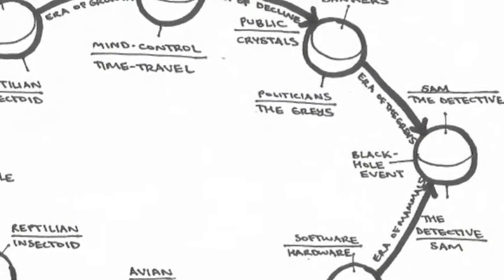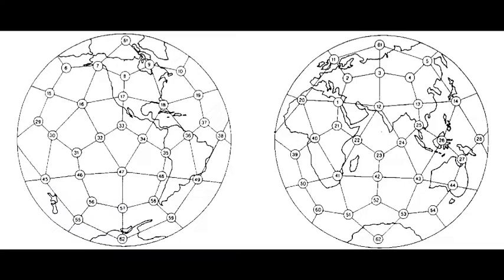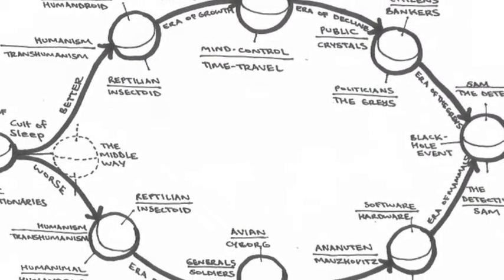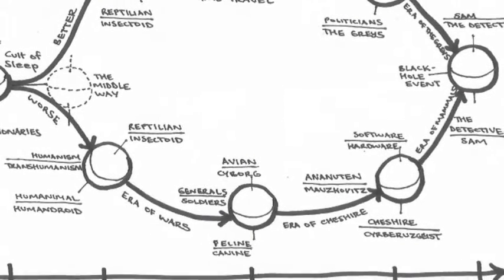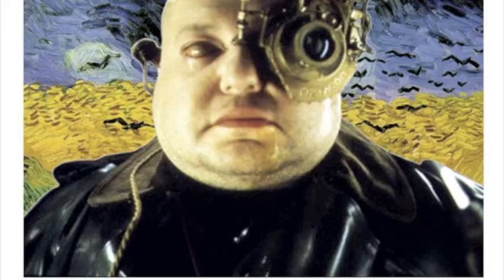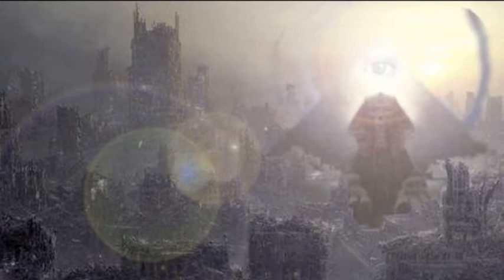So in the future of the better timeline, humanity evolves to become more spiritual and returns to its angelic ancestry. In the worst timeline, the opposite occurs. Humanity devolves and assumes more animalistic forms and features, dividing into factions, splitting between reptilian and insectoid, then into avian, canine, feline hybrids.